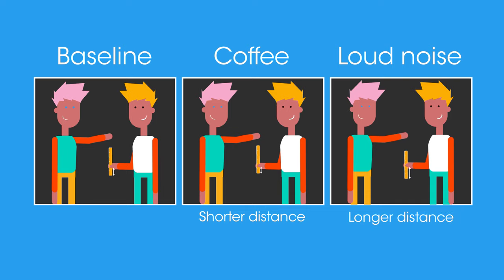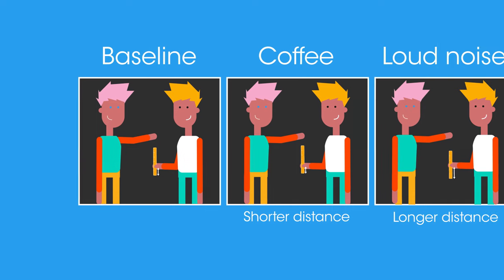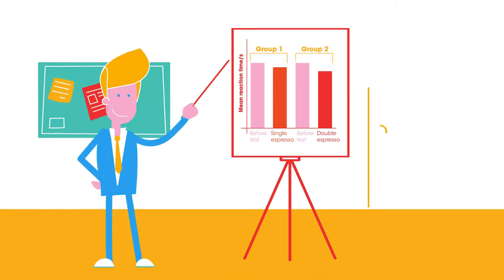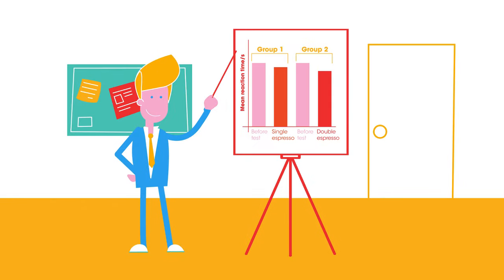The experiment is then repeated and the results compared. Look at these results shown for two groups being tested. Both seem to show that caffeine does improve your reaction time, but it would need a proper statistical analysis to make sure the conclusions are meaningful and not the result of chance.